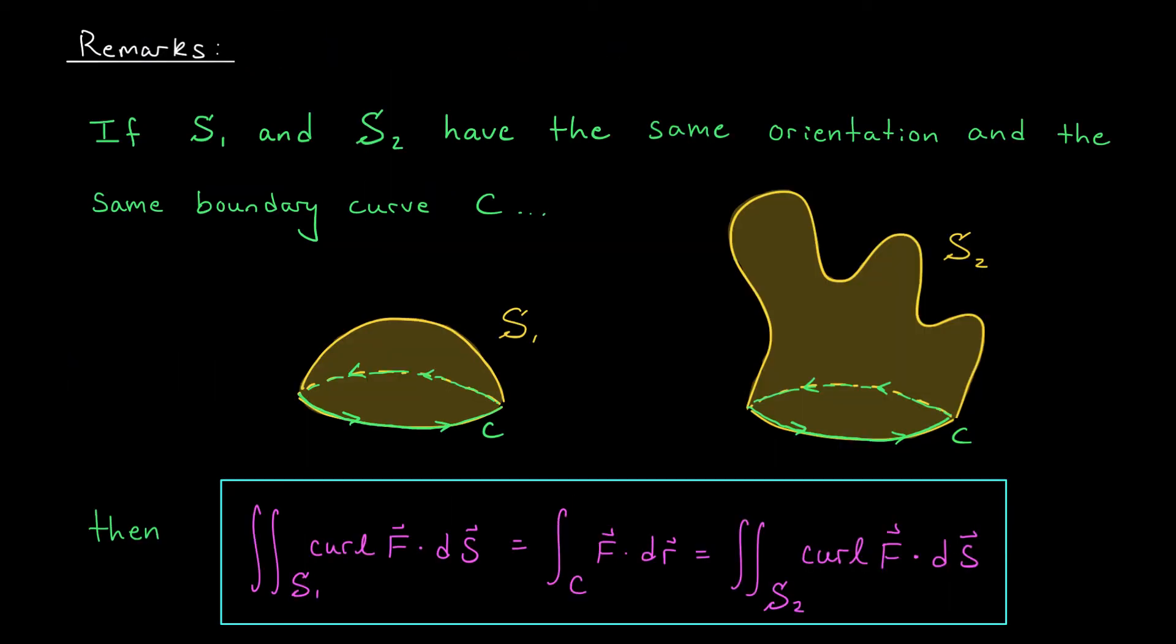I'm going to end this video with a couple cool remarks about Stokes' theorem. Firstly, suppose that we have two surfaces S1 and S2 that have the same orientation and the same boundary curve C. So maybe S1 looks something like this. We have the boundary curve C oriented counterclockwise. And S2 looks a little bit more complicated. But still, we have the same boundary curve C oriented in the same direction. Suppose now that we have a vector field F. According to Stokes' theorem,